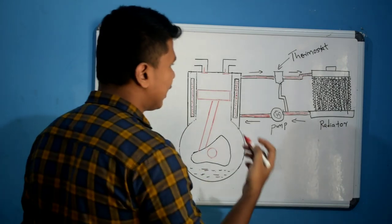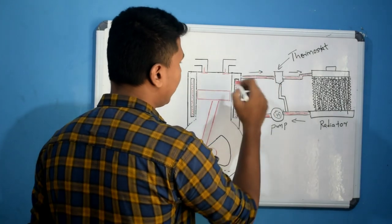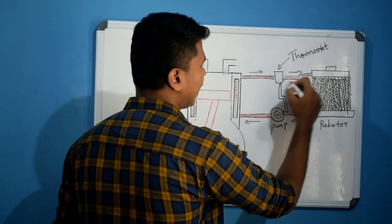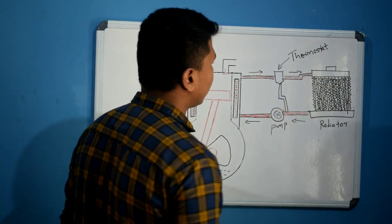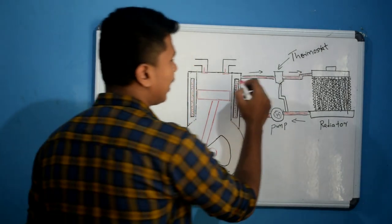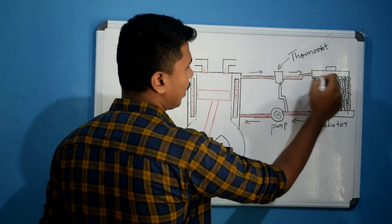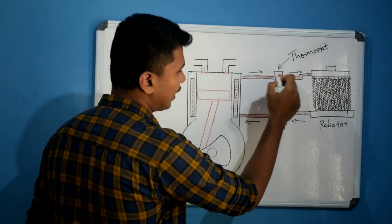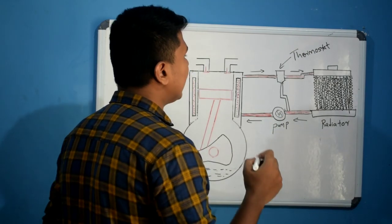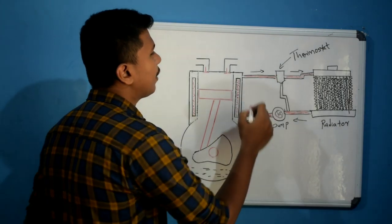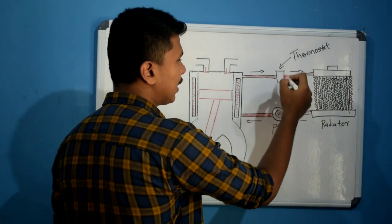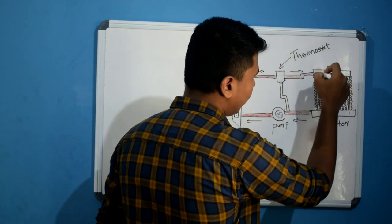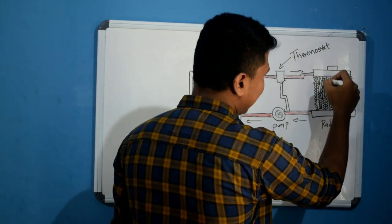When the engine is at normal working temperature, the thermostat opens to direct coolant to the radiator. We use a wax-type thermostat: when the temperature reaches the set working temperature, it opens up and routes coolant through the radiator to release the heat. The thermostat is set to a specific temperature threshold.